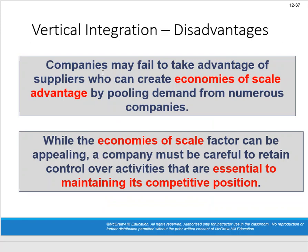Disadvantages of vertical integration: companies may fail to take advantage of suppliers who achieve economies of scale by pooling demand from numerous companies. A supplier making a million units a year has likely optimized quality and efficiency. If we only make a thousand units a year internally, we may not be as efficient. Essex Company manufactures part 4A used in one of its products. The unit product cost is: direct materials, direct labor, variable overhead, depreciation of special equipment, supervisor salary, and general factory overhead — totaling $30 per unit.